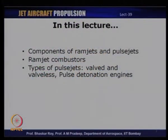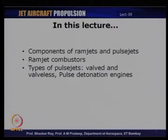In today's lecture, let us take a look at the topics we are going to discuss. We are going to talk about the components of ramjets and pulse jets. We will also be talking about ramjet combustors in some detail, which we will see are very similar to the afterburners in turbojet engines. We will also see how we can analyze ramjet combustors and determine total pressure loss across combustors. We will subsequently take up the different types of pulse jet engines — the valved and the valveless pulse jet engines — and also briefly discuss pulse detonation engines.